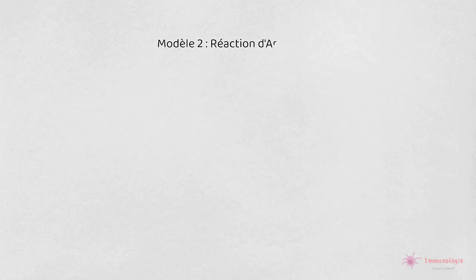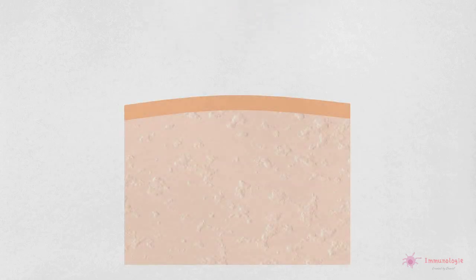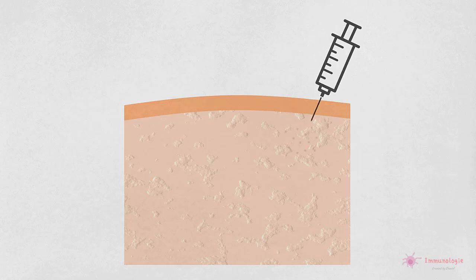Deuxièmement, la réaction d'Arthus est une forme localisée de vascularite expérimentale médiée par des complexes immuns. Elle est induite par injection intradermique d'un antigène à un animal préalablement immunisé ou un animal ayant reçu une injection intraveineuse d'anticorps spécifique de cet antigène.